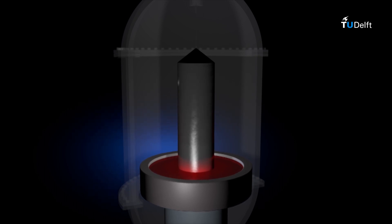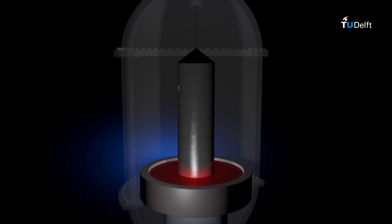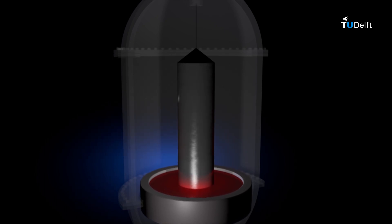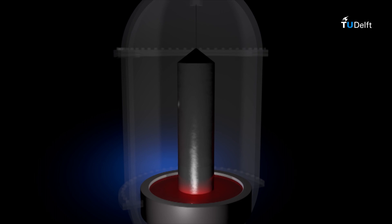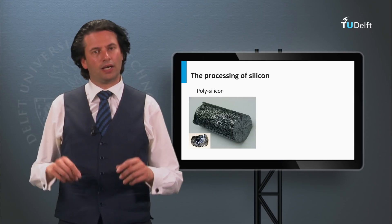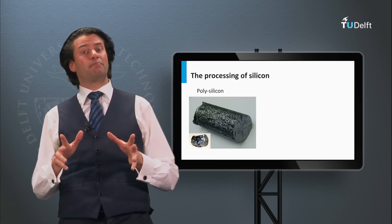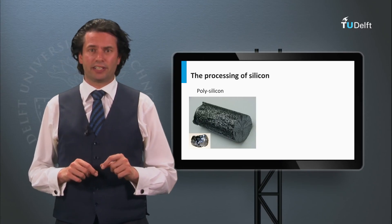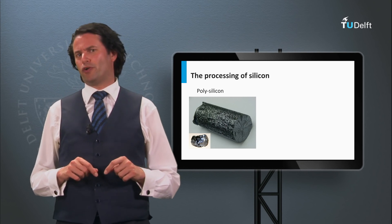The crucible is made from quartz, which partly dissolves in the melt as well. Consequently, Czochralski monocrystalline silicon has a relatively high oxygen level.